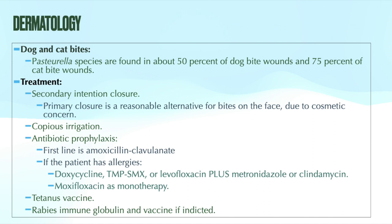Cat bites are more associated with bacterial infection — anecdotally in practice I see a lot more infected cat bites than dog bites. Pasteurella is a gram-negative bacteria found in about 50% of dog bites and about 75% of cat bite wounds.